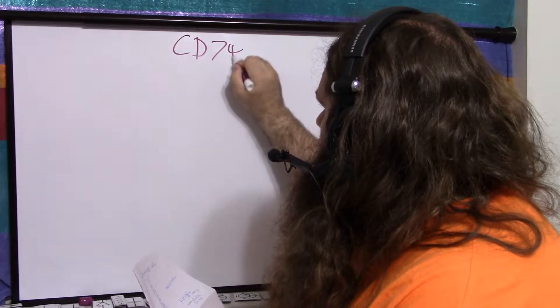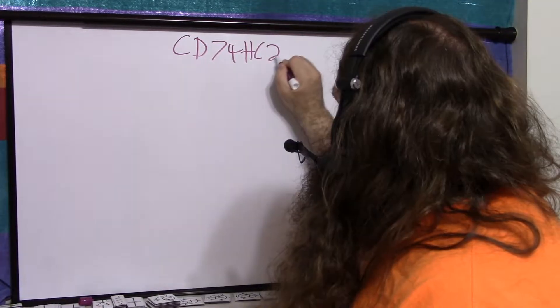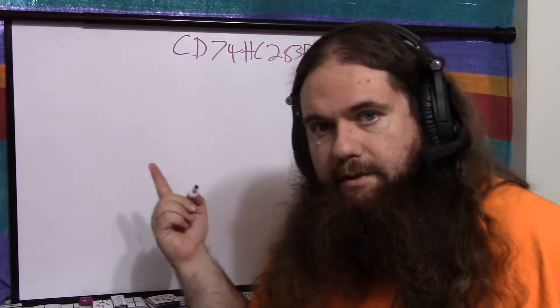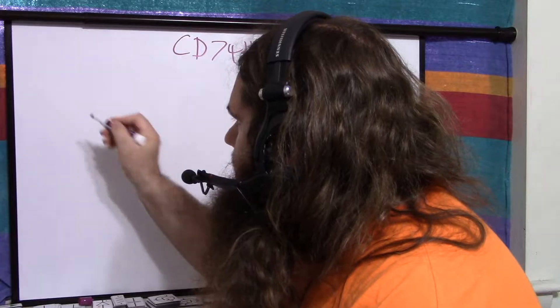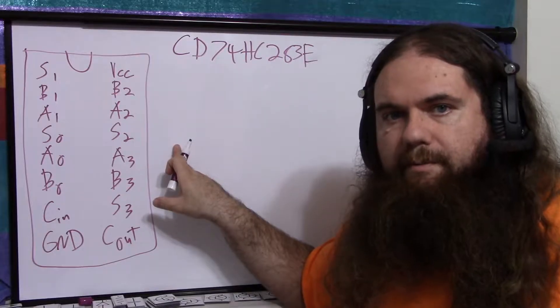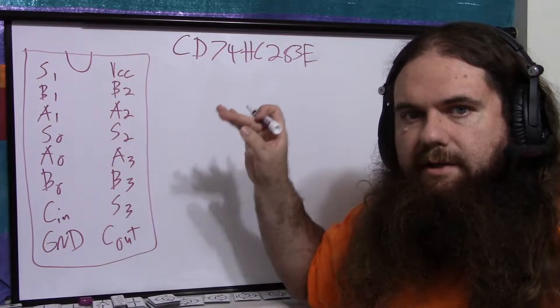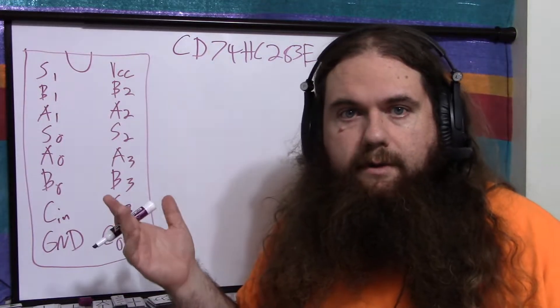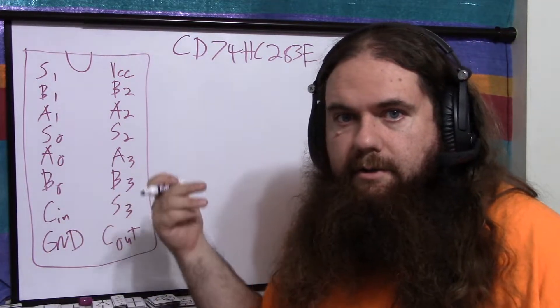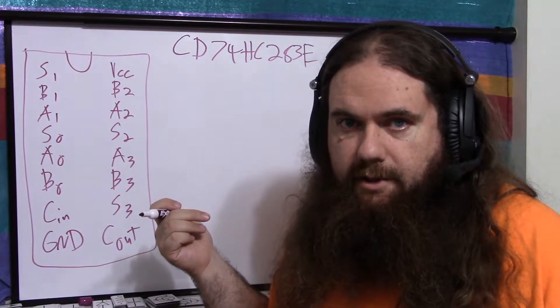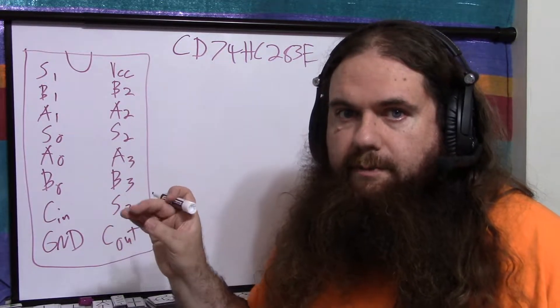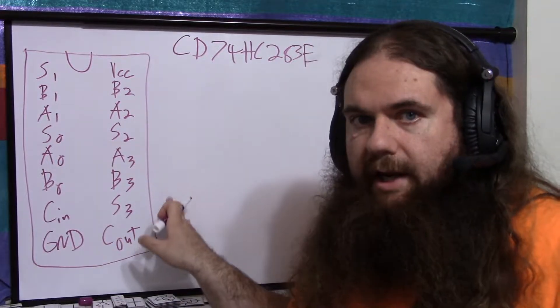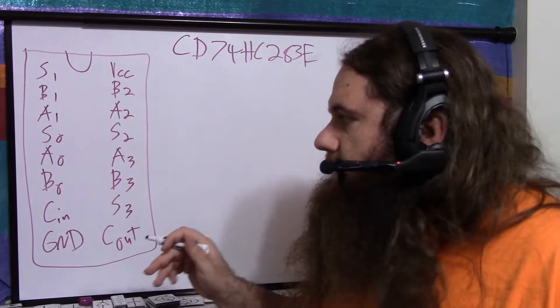The CD74HC283E is what I'm using, the DIP version of course because breadboards, and it has these pins. This is a 4-bit adder, and it's designed to be chained, so if you need a 64-bit adder, you could use 16 of these chips. 16 times 4 bits is 64 bits. At that point, you're probably better off buying a bigger chip, but you can just chain them to any size.